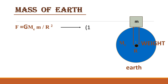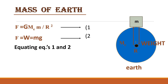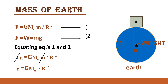As Newton said, every action has an equal but opposite reaction, and every object experiences the force of gravity equal to its weight. So we can say that F = W and W = mg — this is equation number 2. Since the left-hand sides of both equations are equal, the right-hand sides are also equal. Equating equations 1 and 2: mg = G·ME·m / R². We can see there is m on both sides, so we cancel them. The new formula becomes: g = G·ME / R².